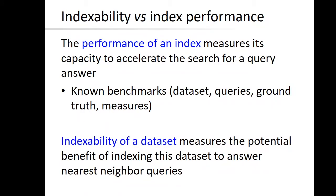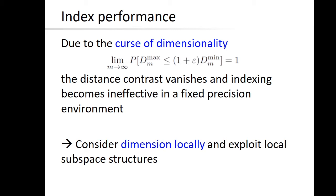In similarity search in metric spaces, the performance of an index measures its capacity to accelerate the search when solving queries. There are many benchmarks to evaluate index performance experimentally. However, indexes don't have the same performance in all datasets, so we say the indexability of a dataset is a measure of the potential benefits we will obtain in terms of search cost if we index the collection. The indexability depends mainly on the distance distribution — if all distances are too concentrated around the average distance, then the discarding capacity of the index is reduced. This situation is known as the curse of dimensionality, and in some spaces the performance of the indexes is close to that of a sequential search.